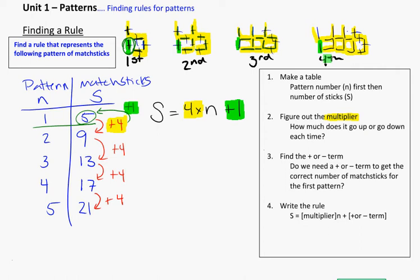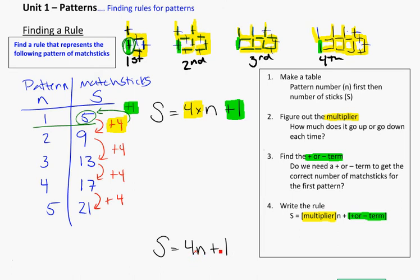That's how we write our rule. The plus or minus term: look at the very first term and figure out — if I need five and I know I'm going to have four every single time, what do I need to add or subtract to get to that first number? The multiplier is what we're increasing by every single time. We fill in S and N for our rule. Sometimes we write S equals four N plus one — that comes from algebra where there's an invisible times sign between a letter and a number. You might see it written as four times N with the times sign, or as four N without — either way is correct.